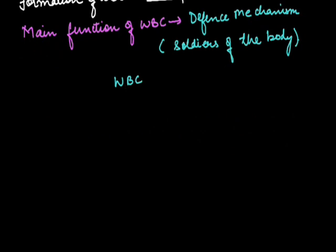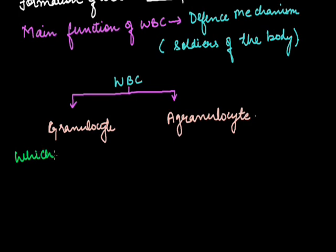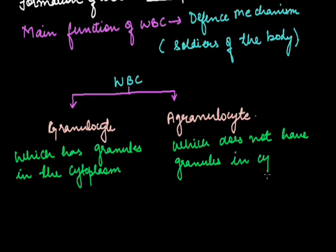WBCs are broadly divided into two types. One is granulocyte and the other is agranulocyte. Granulocyte WBC is that WBC which has granules in the cytoplasm, whereas agranulocyte is which does not have granules in the cytoplasm.